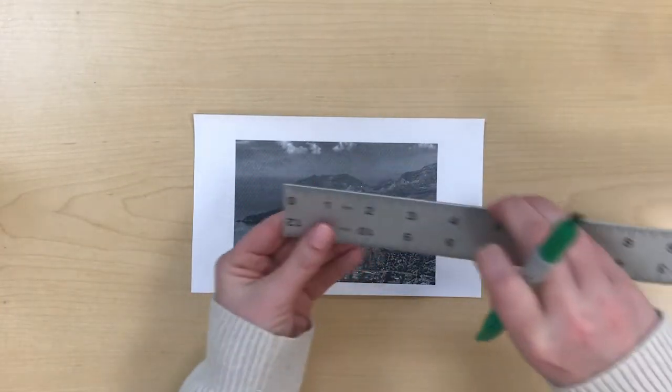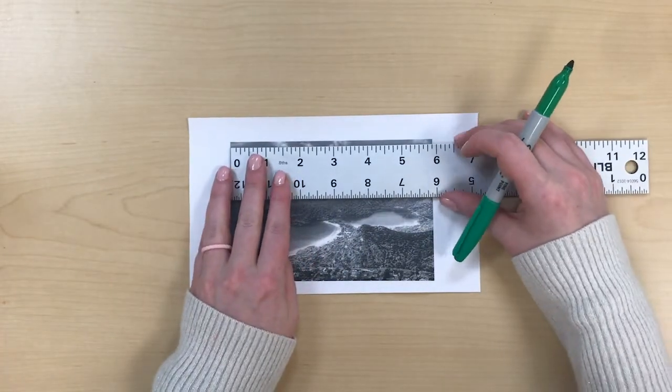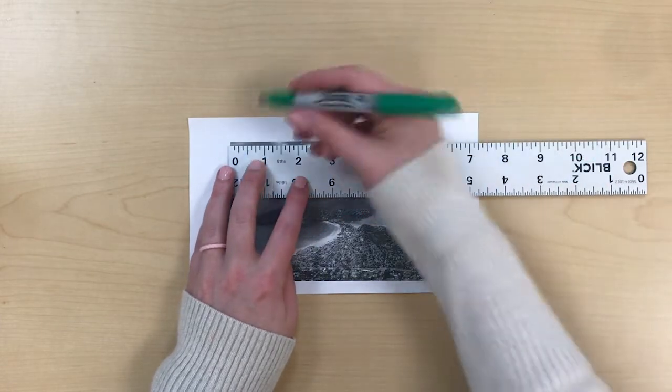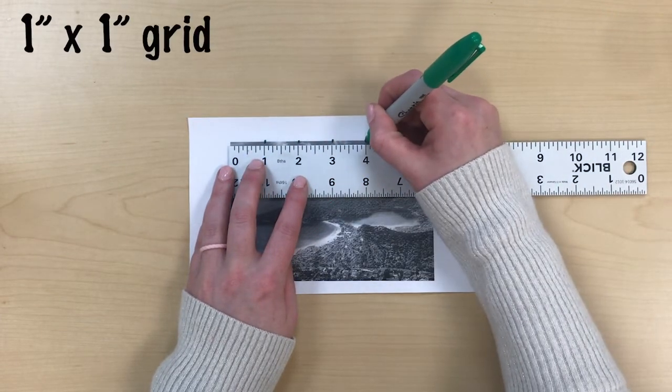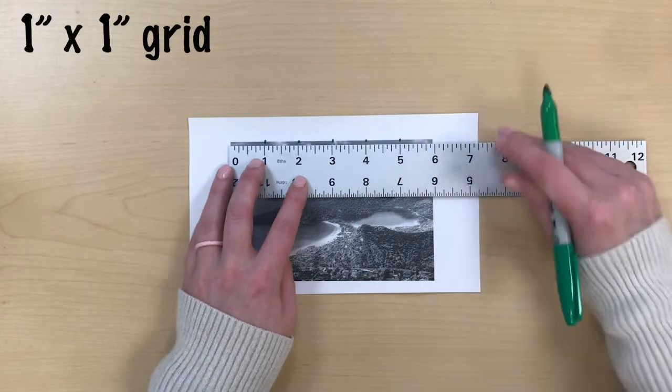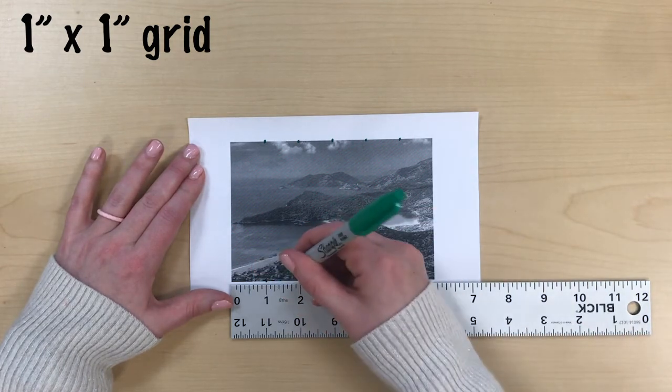You can use a pencil and we're gonna line up the start of the ruler with the start of the photograph and make a little mark at every inch. This grid will be one inch by one inch. Next I'll slide my ruler to the bottom of the photo without flipping it over and continue to make a mark at each inch.